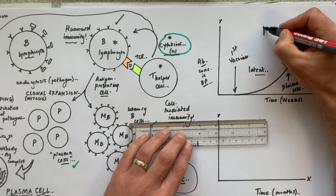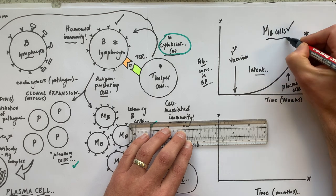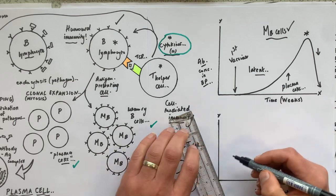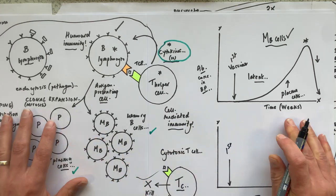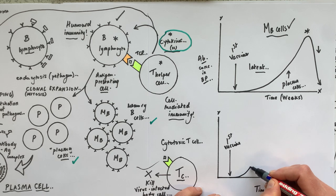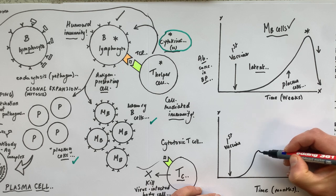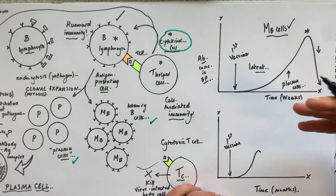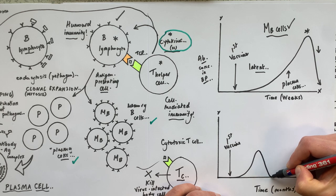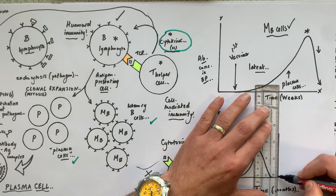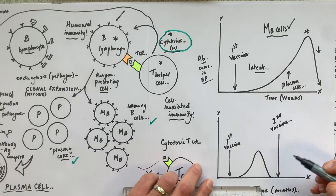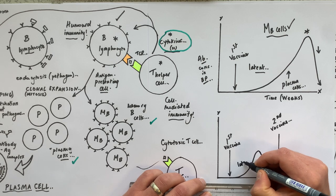On a second graph where the x-axis is months rather than weeks: at the time of the first vaccine we get the latent period, a peak, and then a decrease — because antibodies last about three to four weeks in the blood plasma before being broken down into their amino acids. If a second injection of the same vaccine with the same antigen is given, the latent period is much shorter.